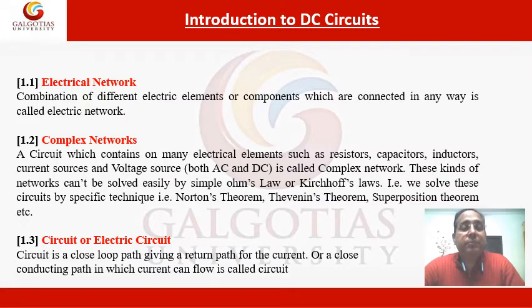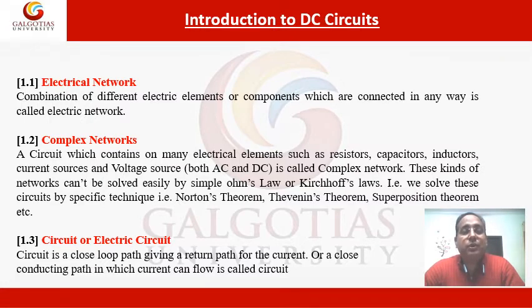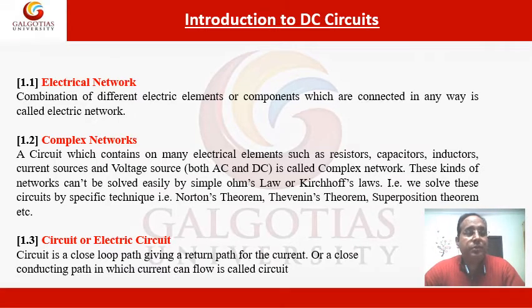Let's start with DC circuits. A circuit, also called an electrical network, means if we introduce some electrical components in a circuit it is called an electrical network — it is the combination of different types of components connected in such a way that we get an output when providing input. A complex network is one having more number of electrical components, and such networks can be solved by theorems and laws like Kirchhoff's law or the superposition theorem.